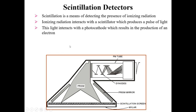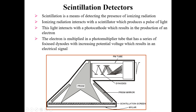What happens next is that the electrons produced from the previous interaction are multiplied in a photomultiplier tube that has a series of focused dynodes. The mechanism will be discussed in full detail on a later slide. With increasing potential voltage, an electrical signal is produced.